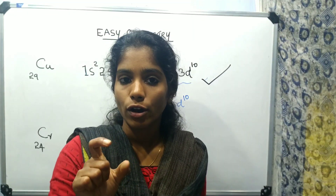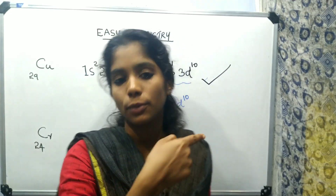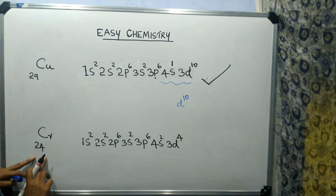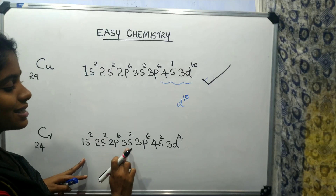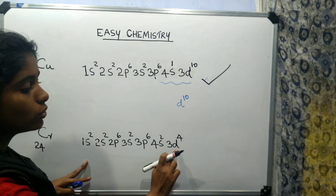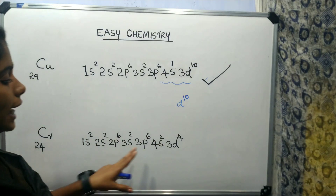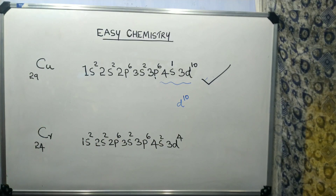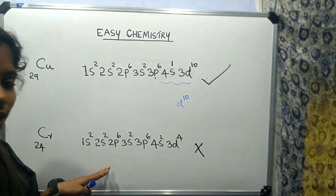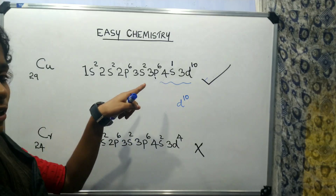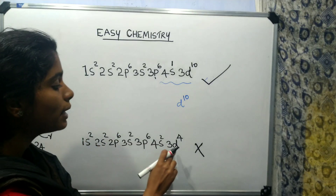Now we can look at chromium. Chromium has atomic number 24. Its electronic configuration is: 1s2, 2s2, 2p6, 3s2, 3p6, 4s2, 3d4. But this is a problem — is this configuration correct? We have to go through this. The stability of chromium is in question, so we need to learn the correct one. Chromium is not stable in this configuration.